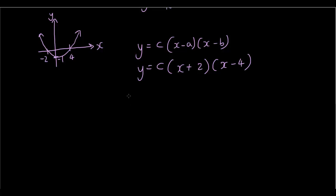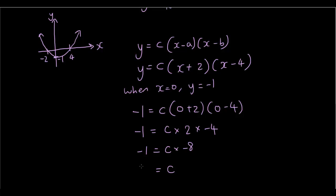Okay, so what we want to do now is find c. So when x equals 0, y equals negative 1. So negative 1 equals c(0+2)(0-4). Negative 1 equals c times 2 times negative 4. So, sorry, 2 times negative 4 is negative 8. Negative 1 equals c times negative 8. So c equals negative 1 divided by negative 8, which is just 1 over 8.